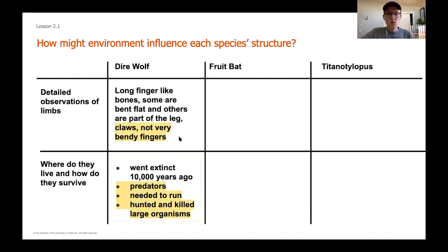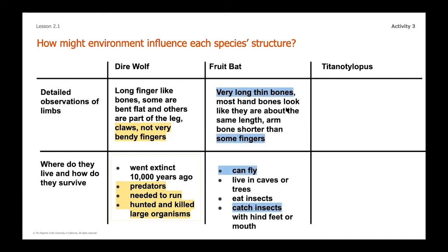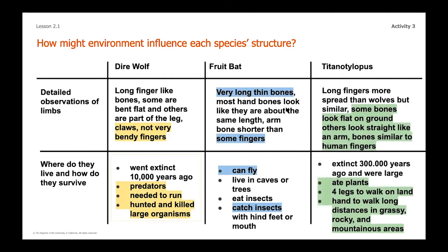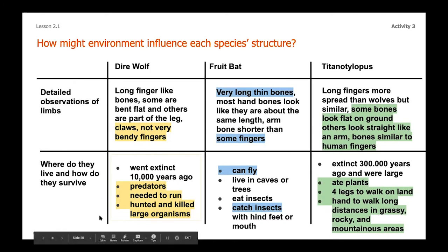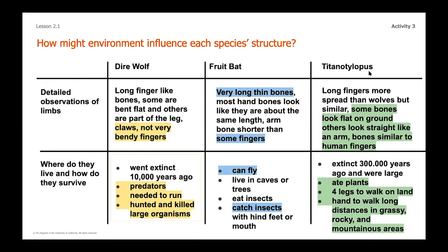What I'd love for you to do now is take a look at the fruit bat and the titanolophus. I highlighted some things that may be pieces of the environment that influence that species' structure. Go ahead and pause — you may want to jot this down and answer this question: what are some of the pieces of the environment that could have influenced the specific structures of those species' limbs? We did the wolf together; now go ahead and pause and think about the fruit bat and the titanolophus.